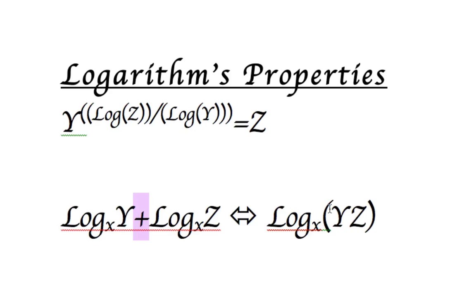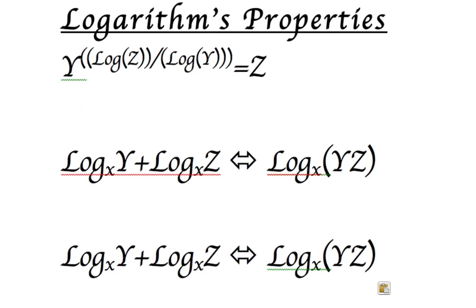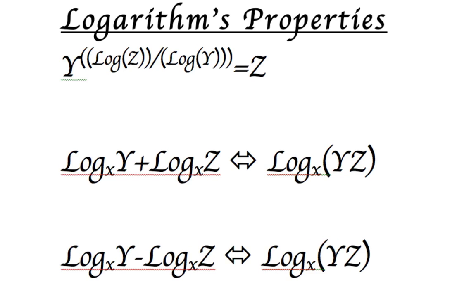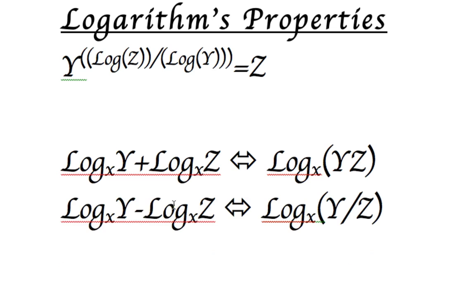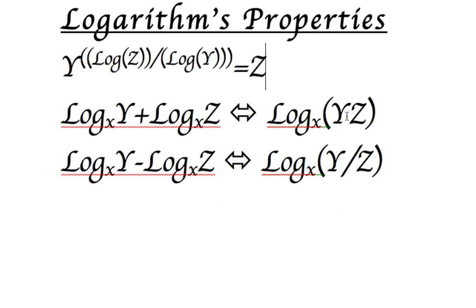That's when you have addition, you can just change it to multiplication, only if they have the same base. If this was like base of n, then you wouldn't be able to do that. And you can probably guess this one, but if you have subtraction, then it's y divided by z. So those are some nifty rules.